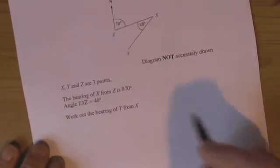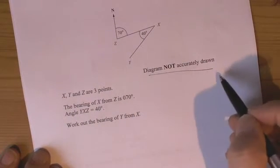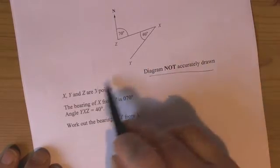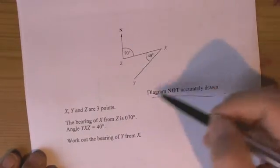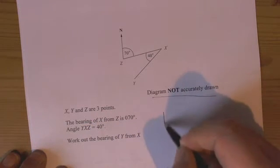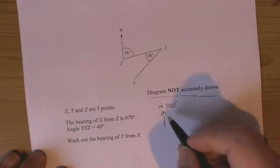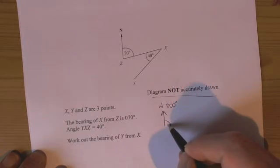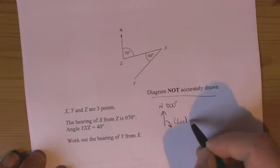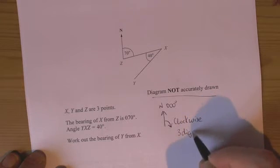Now this question says the diagram's not being drawn accurately, so that is a real big clue that we're not to use a protractor. So it's about using our angle rules and recognising it's still talking about bearings there. So we're still having to think about north being 0, 0, 0 degrees, and whatever measurements we take from the from position, they have to be in a clockwise direction. And we need to remember there's always three digits in our bearing, so we always have three digits in our answers.